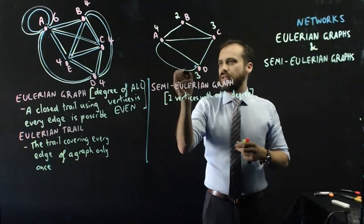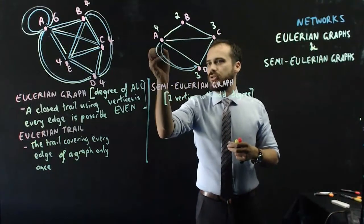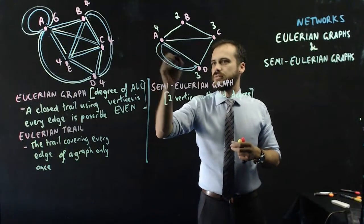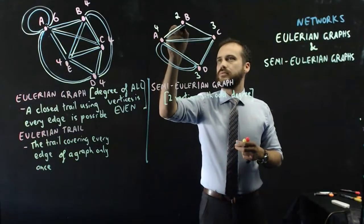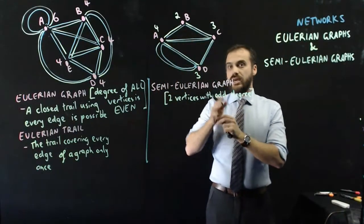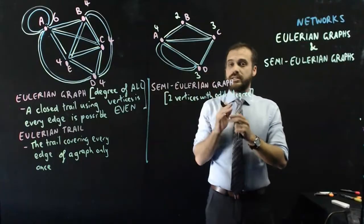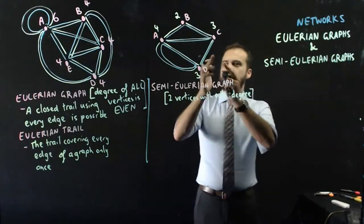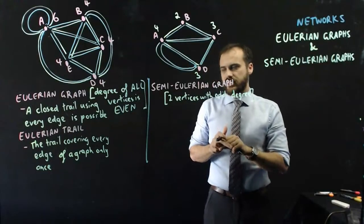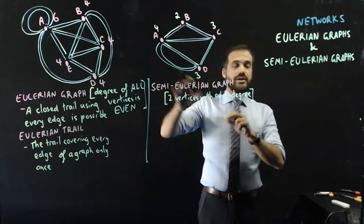And then you can travel along the edges and you can get along every edge exactly once, but the problem is that you won't get back to where you started. So what I've just drawn is a semi-Eulerian trail.